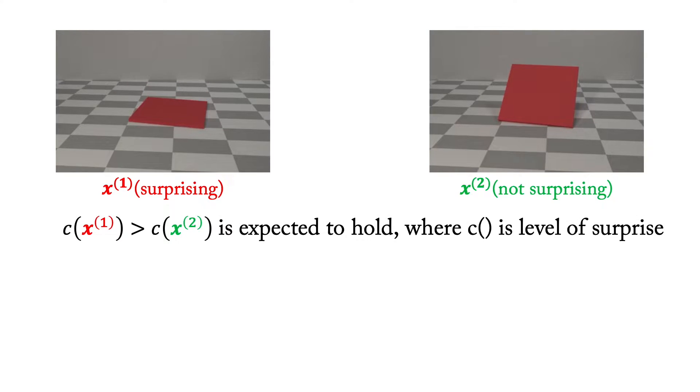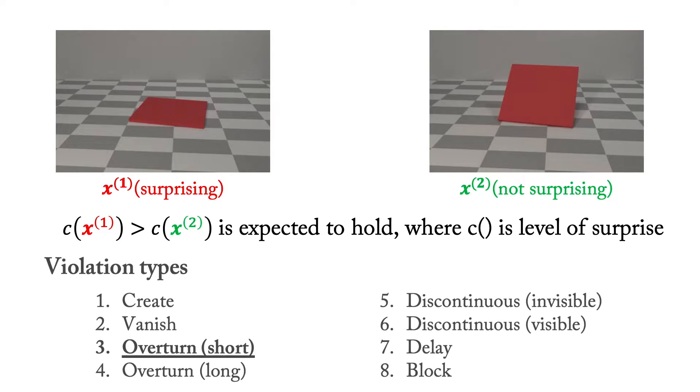The surprise for a physical violation event should be higher than a matched non-violation event. We created eight different types of violations based on developmental research, probing the principles of permanence, solidity, and continuity.